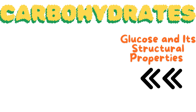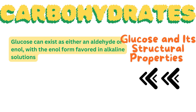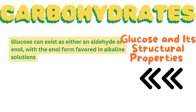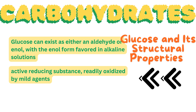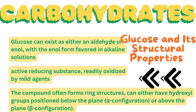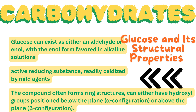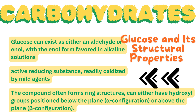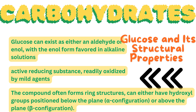Glucose can exist as either an aldehyde or enol form, with the enol form favored in alkaline solutions. Glucose is an active reducing substance, readily oxidized by mild agents. The compound often forms ring structures, depicted using the Haworth formula. These ring structures can have hydroxyl groups positioned below the plane — alpha configuration — or above the plane — beta configuration.